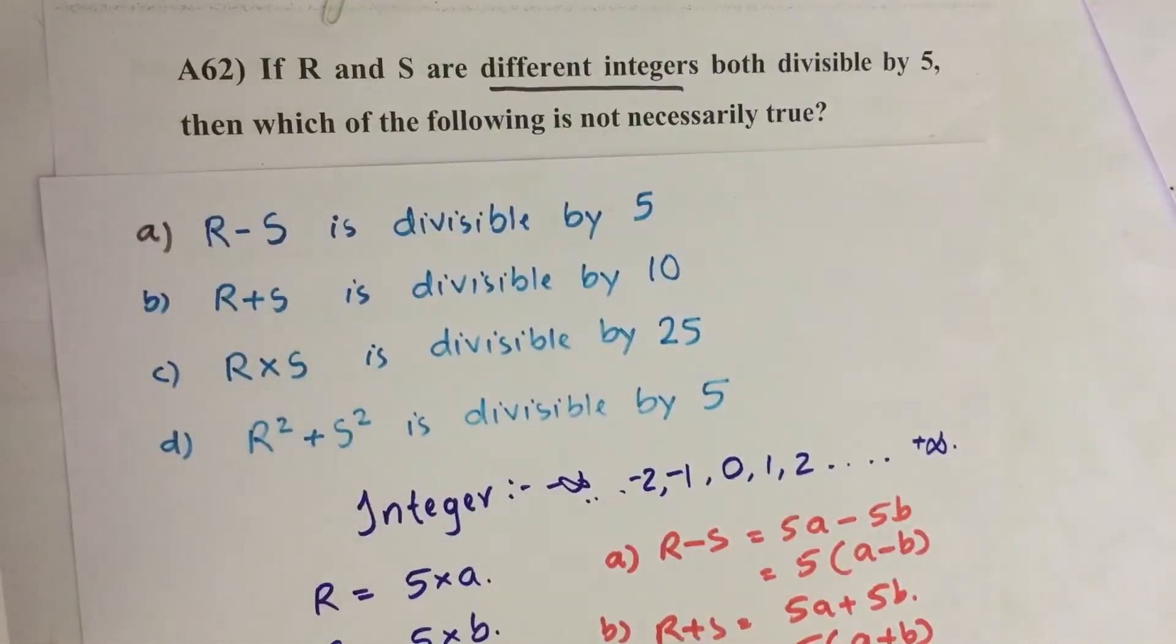Hello everyone, here I am going to solve 2016 CSAT question number 62 from Question Vapor Series A. If R and S are different integers both divisible by 5, then which of the following is not necessarily true? Here we have four statements, so we have to find which one is not necessarily true based on this statement.